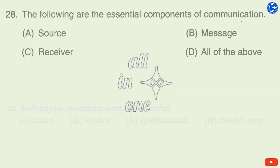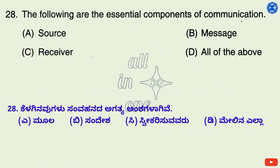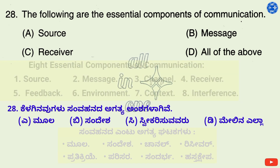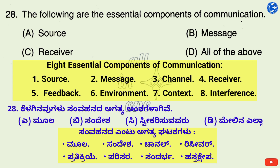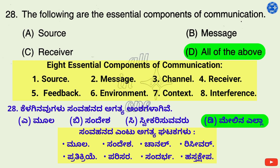Question 28. The following are the essential components of communication — Options: A. Source, B. Message, C. Receiver, D. All of the above. Eight essential components of communication are: Source, Message, Channel, Receiver, Feedback, Environment, Context, and Interference. Therefore, right option is D: All of the above.